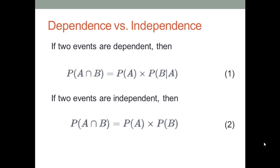Let's talk about independence first. Suppose we have two events, event A and B. If the two events are dependent, when we calculate the probability that both A and B happen together, we have to use equation 1. We need to consider something called a conditional probability, P(B|A) — that means the probability of B given A happens. If the two events are independent, we use equation 2: we simply multiply the probability that A happens by the probability that B happens. We don't need to consider conditional probability if the two events are independent.